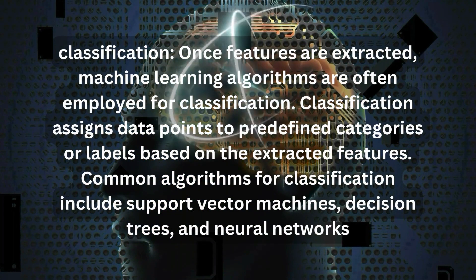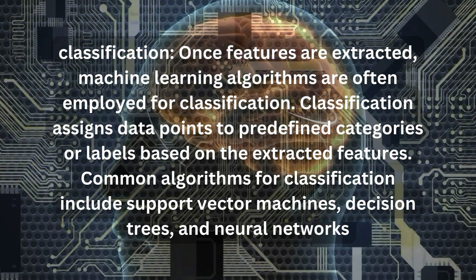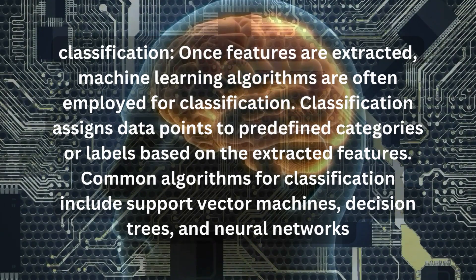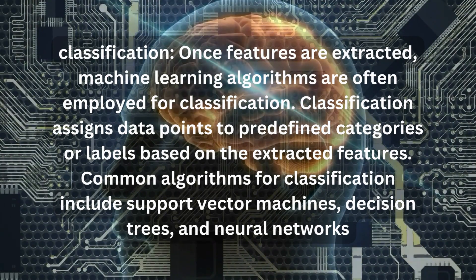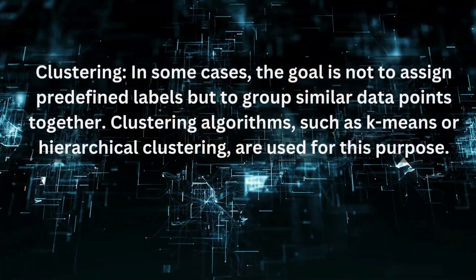Classification: Once features are extracted, machine learning algorithms are often employed for classification. Classification assigns data points to predefined categories or labels based on the extracted features. Common algorithms for classification include support vector machines, decision trees, and neural networks.